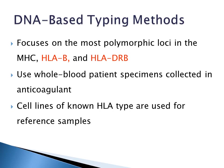There are also DNA-based typing methods, as opposed to the serological antibody-antigen-based methods. DNA typing focuses on the most polymorphic loci in the MHC, which are HLA-B and HLA-DRB. Whole blood patient specimens collected in anticoagulant are used for DNA typing, and cell lines of known HLA type are used for reference samples.